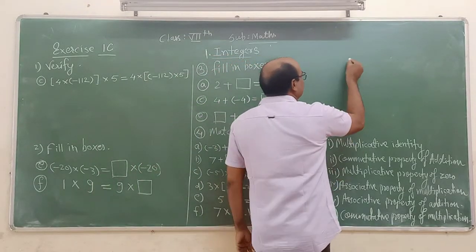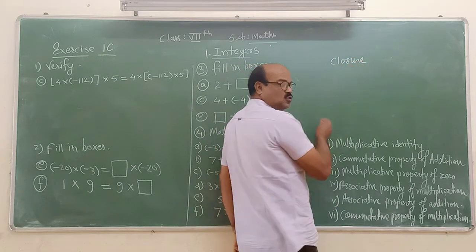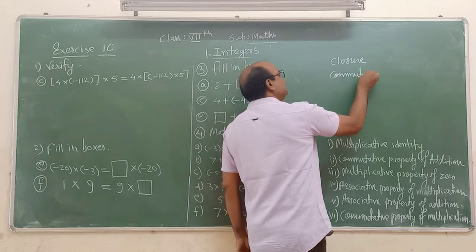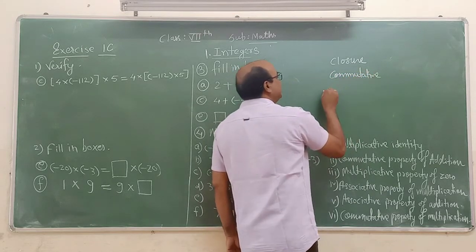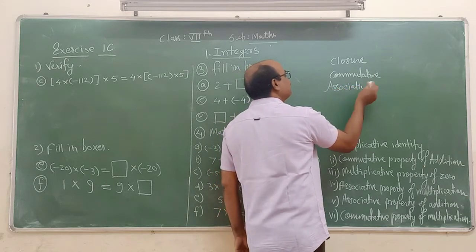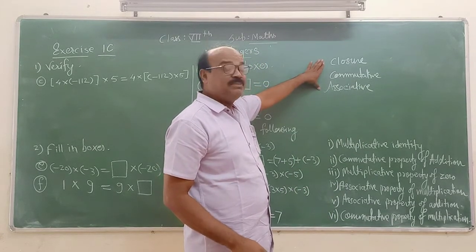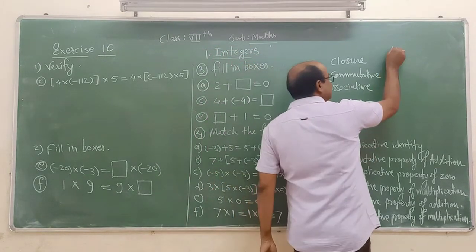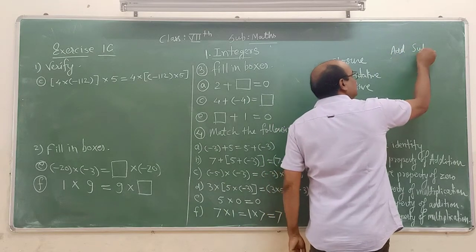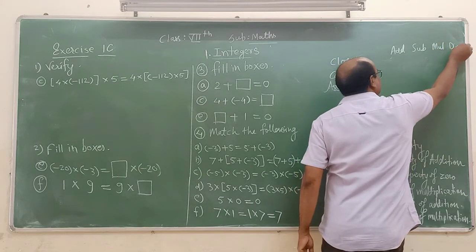So students, regarding the properties — closure property, commutative property, and associative property — we have seen these three properties under addition, under subtraction, under multiplication, and under division.